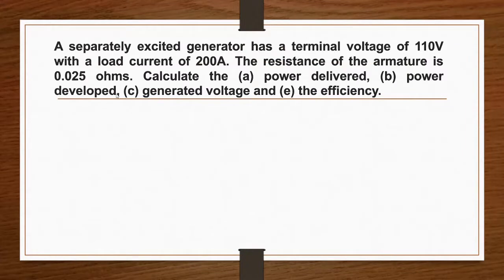A Separately Excited Generator has a terminal voltage of 110 volts with a load current of 200 ampere. The resistance of the armature is 0.025 ohms. Calculate the power delivered, power developed, generated voltage, and the efficiency.